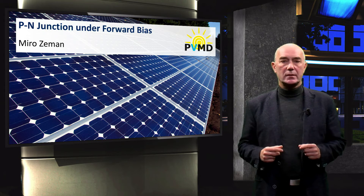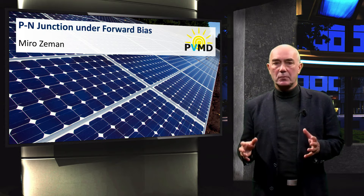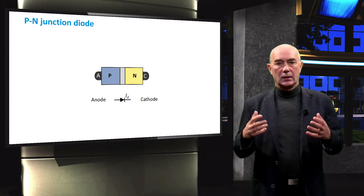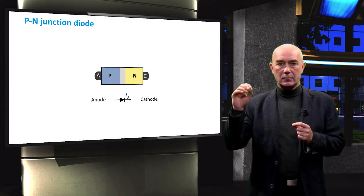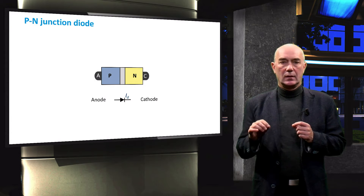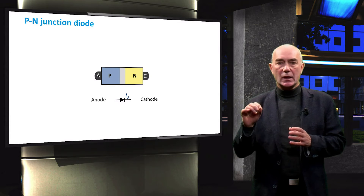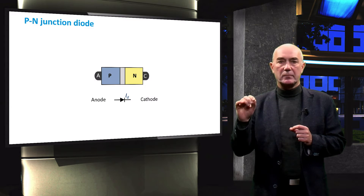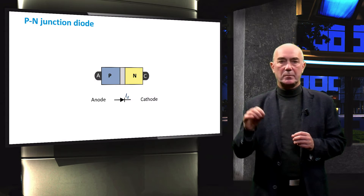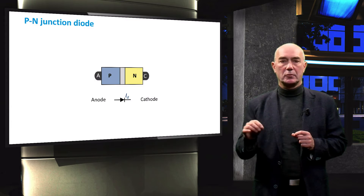Let's take our present knowledge of a PN junction one step further and see what happens when we apply a voltage to the junction. This is a schematic picture of a PN junction with electrodes attached to it. With the attachment of electrodes to the PN junction, it has become an operational device that we call a PN junction diode. A represents the anode and C represents the cathode.